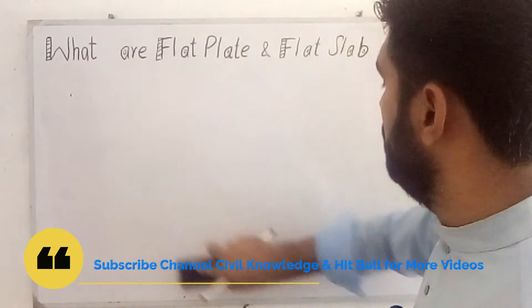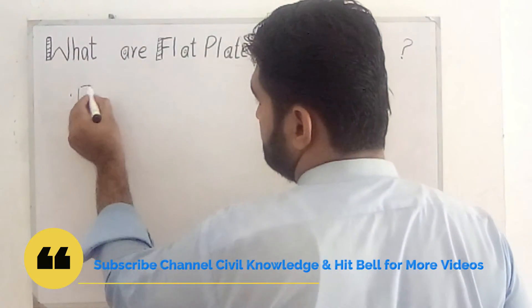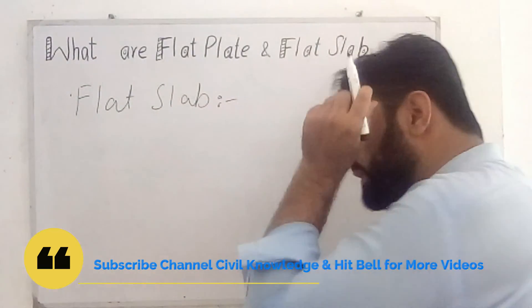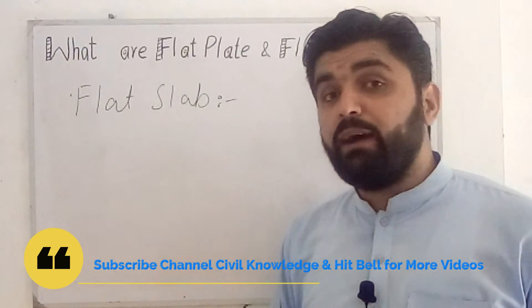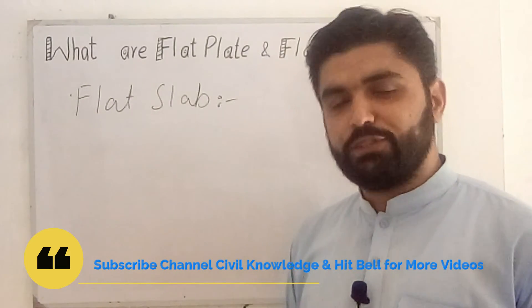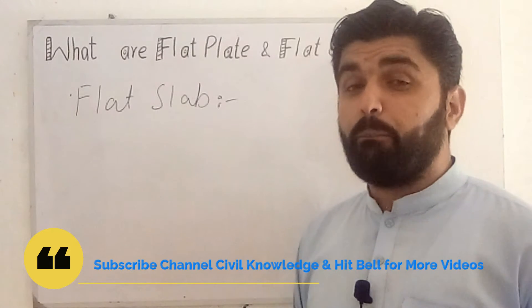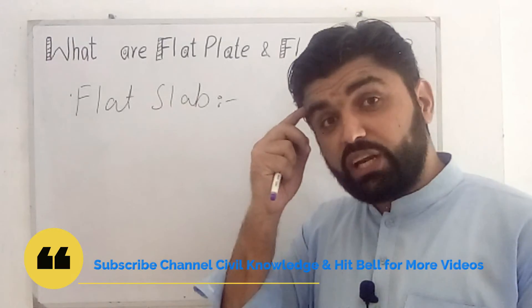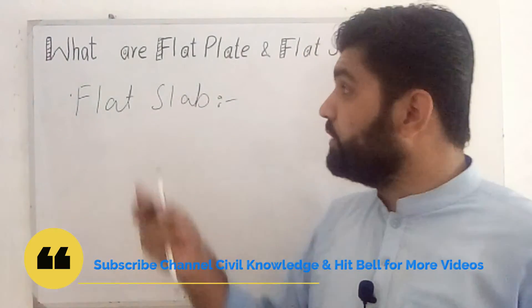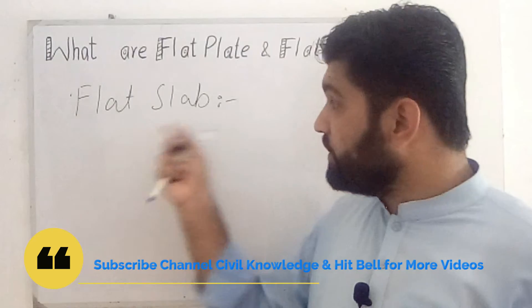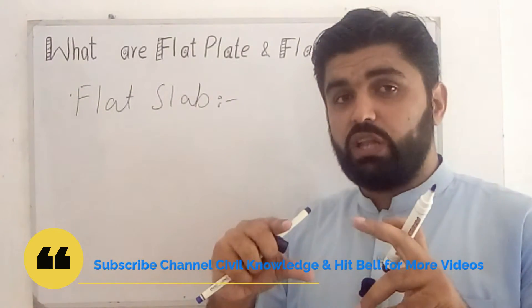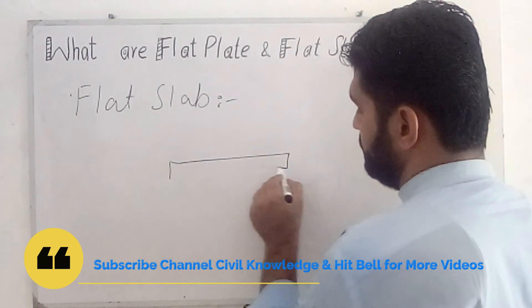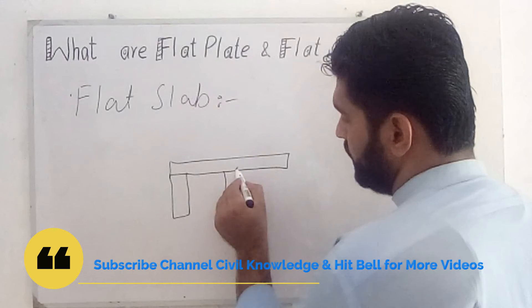Now let's come to flat slab. A flat slab is also a type of slab which is directly supported on columns without beams. It is also directly supported on columns without beams, but there will be some thickened portion just near the column. You can see that this is our slab and these are the columns.